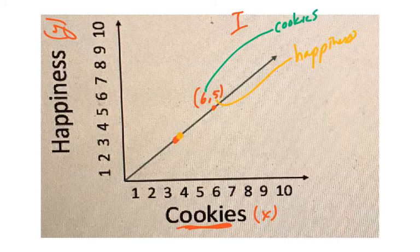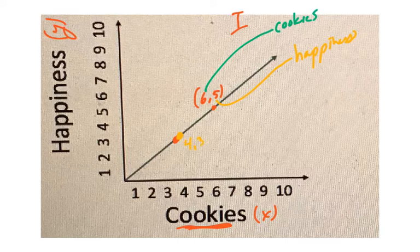This point right here, that I marked earlier, is maybe 4, 3. So 4 cookies would give you a happiness score of 3.